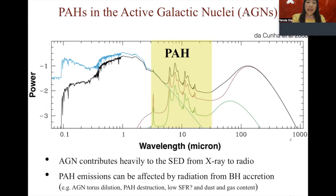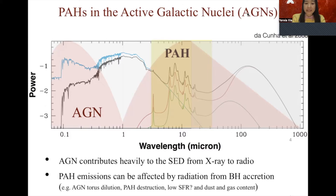Despite PAH's potential applications in galaxies, the application of PAH in AGN environments is questionable. Because when an AGN turns on, it can contribute heavily to the entire spectral energy distribution from X-ray all the way to the radio band. The PAH emissions can be affected by radiation from black hole accretion through different factors, including the AGN torus dilution effect, the destruction of PAH molecules by X-ray photons or shock processes, the star formation in the host galaxies that produce photons to excite PAH molecules, as well as the gas reservoir and dust in the host galaxies.